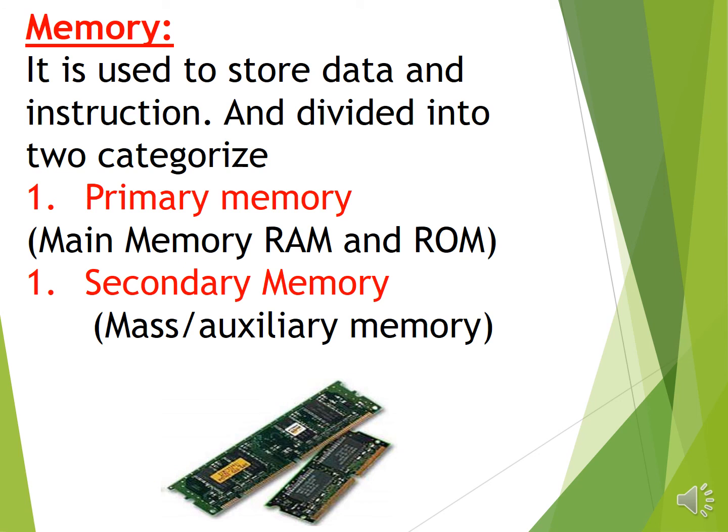For example, primary memory like RAM and ROM is used during processing and execution on the computer, but its size is limited. For larger storage needs, secondary memory is used. Secondary memory includes hard disk, USB, CDs, DVDs, and flash drives.